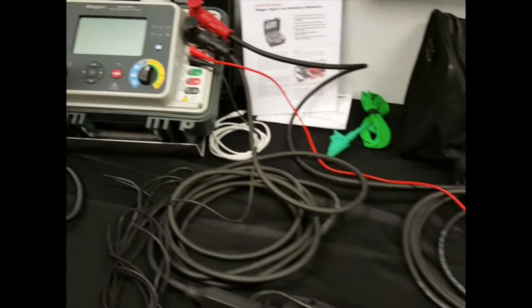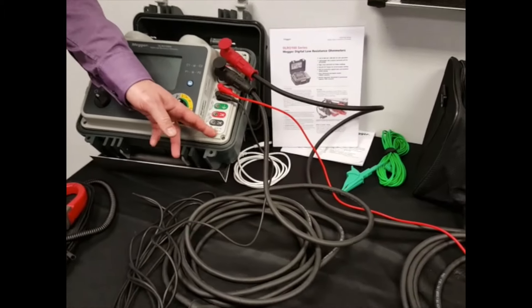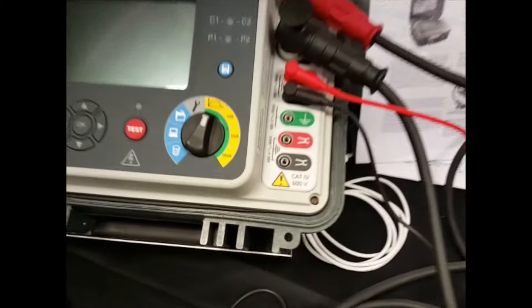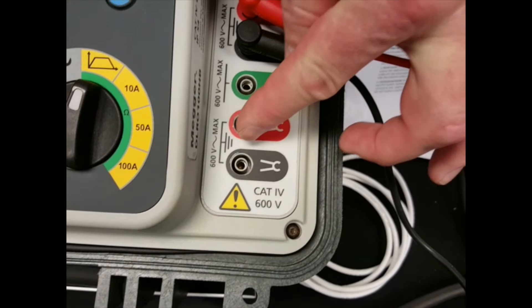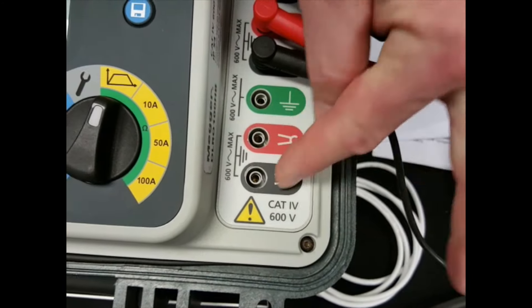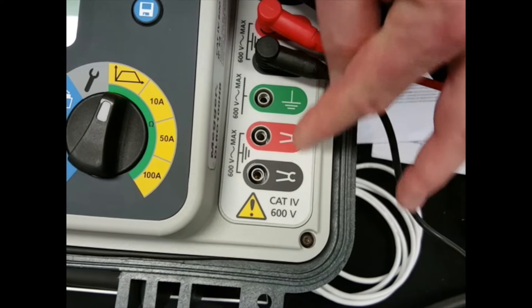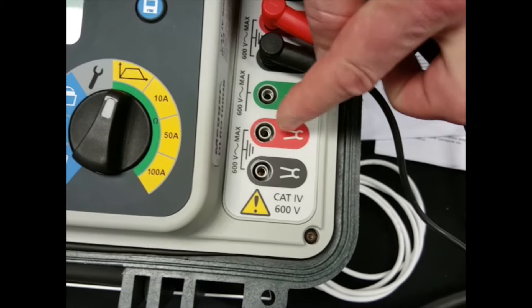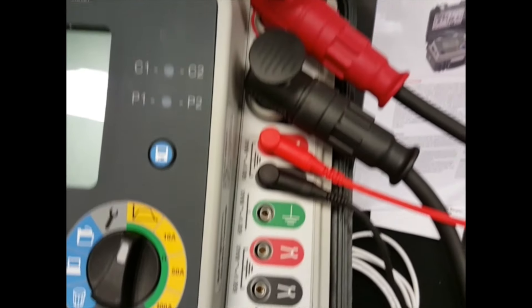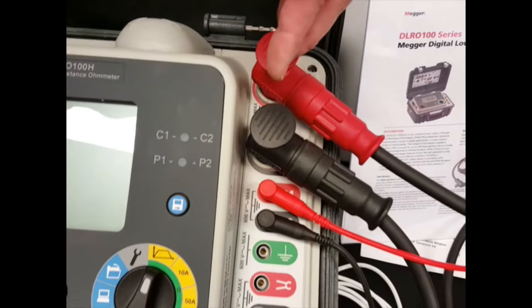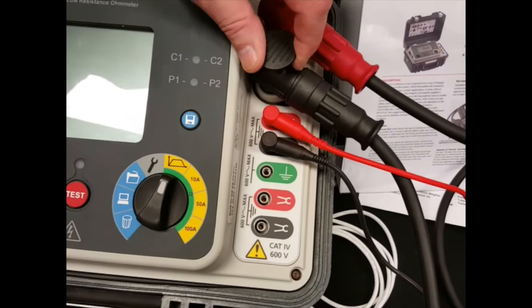This particular instrument, being Cat4 600V, is protected across all the terminals. You'll note here on the terminals these two terminals which are for the ground clamp terminals. These are 600V protected, so is the earth terminal. The potential and current terminals are all 600V protected to make sure the instrument remains safe.